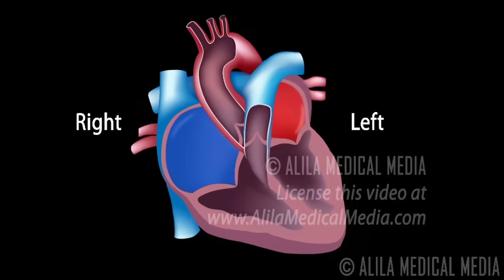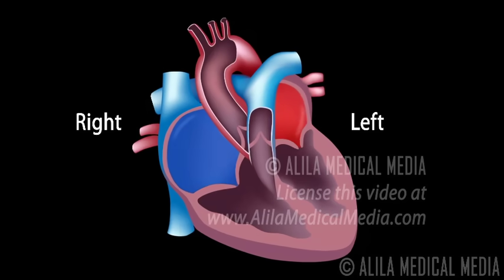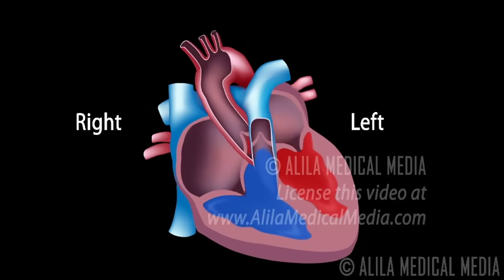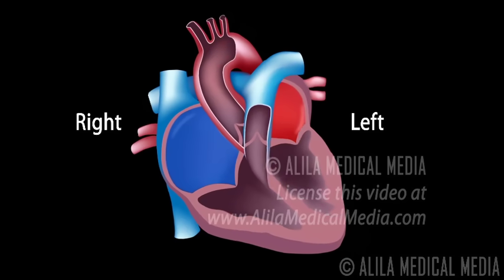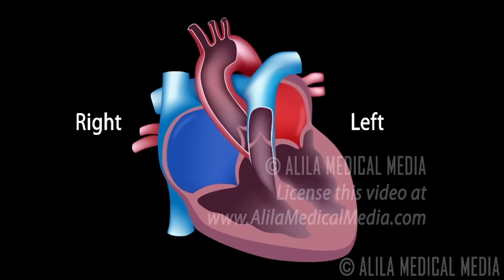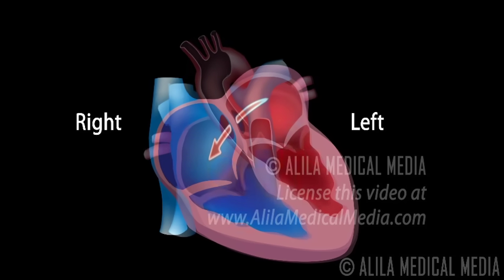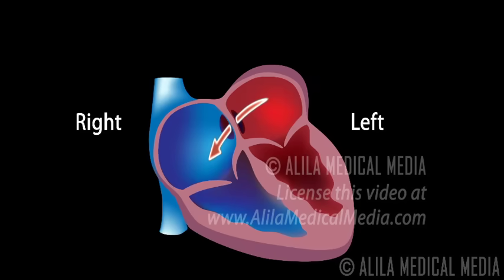This is because the left side has to pump blood all over the body, while the right side only needs to send it to the lungs. Fortunately, in a majority of people, the defect is relatively small. The shunt is negligible and does not cause any symptoms.